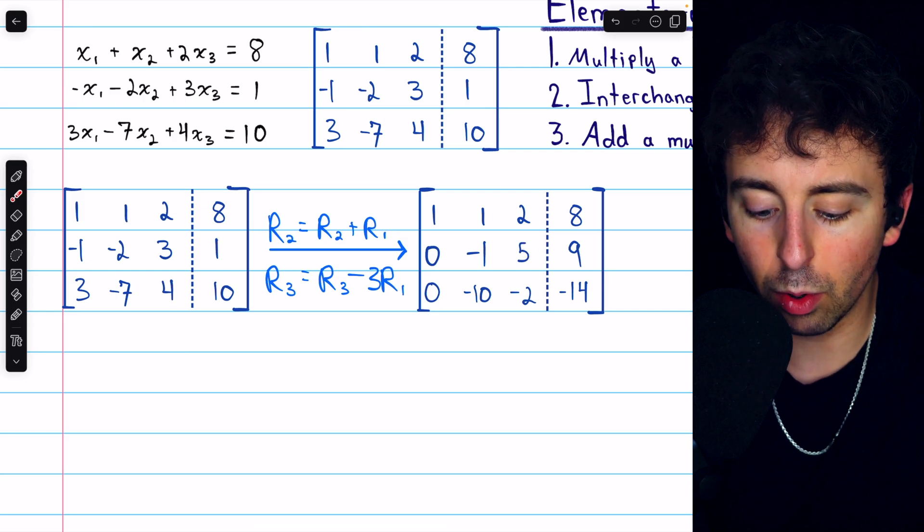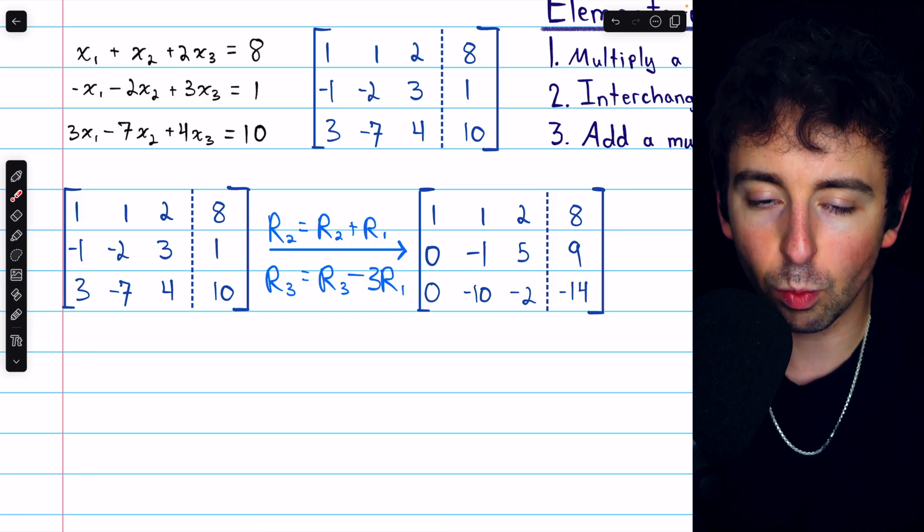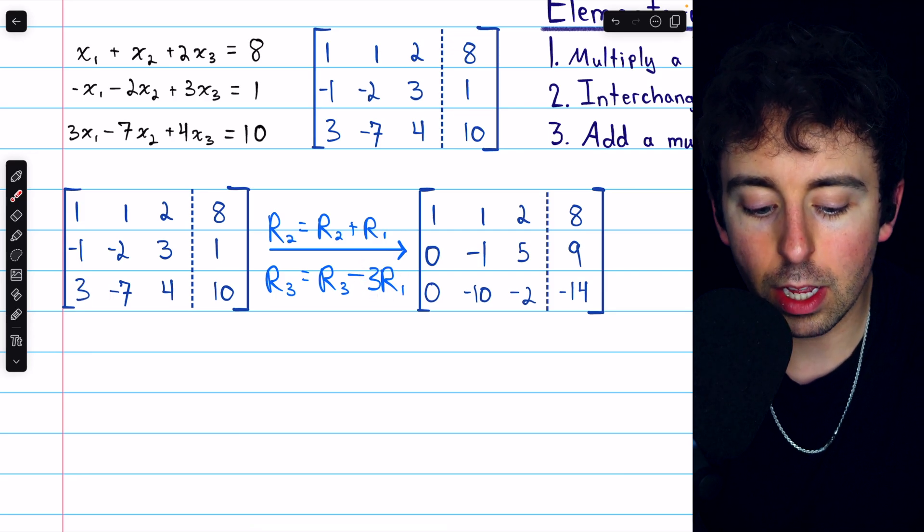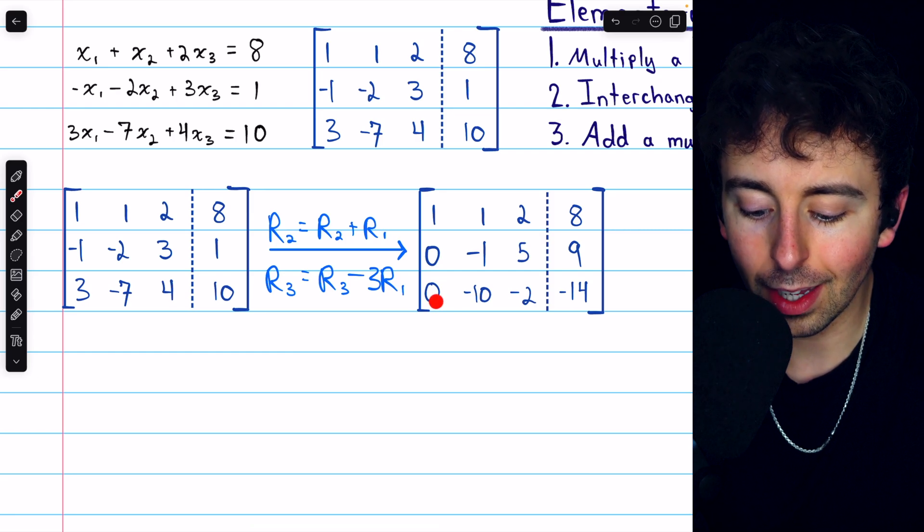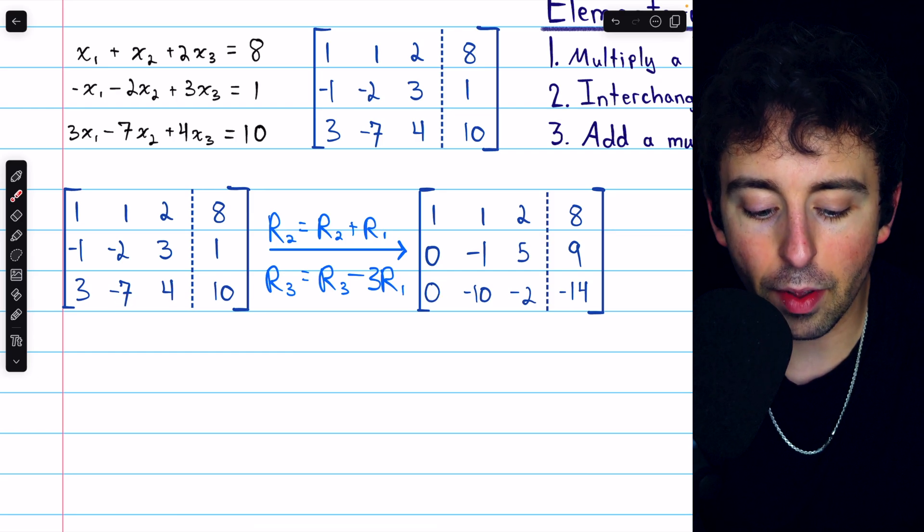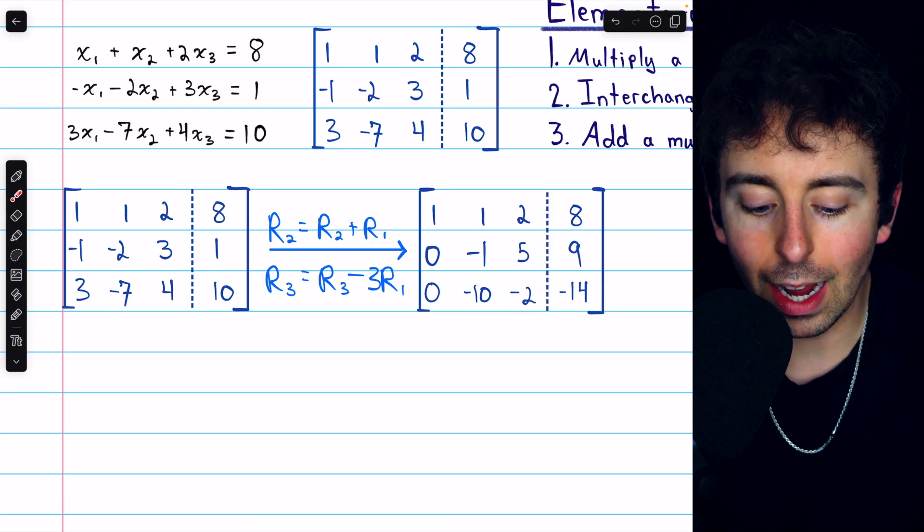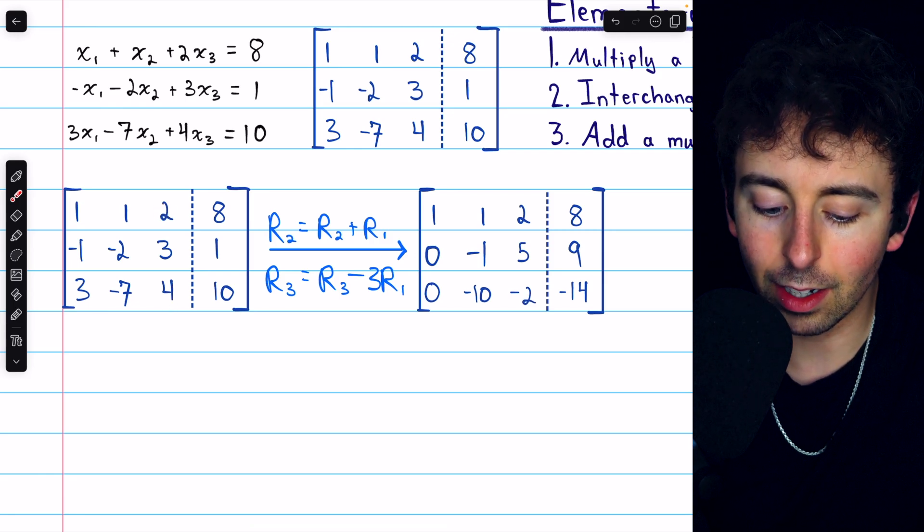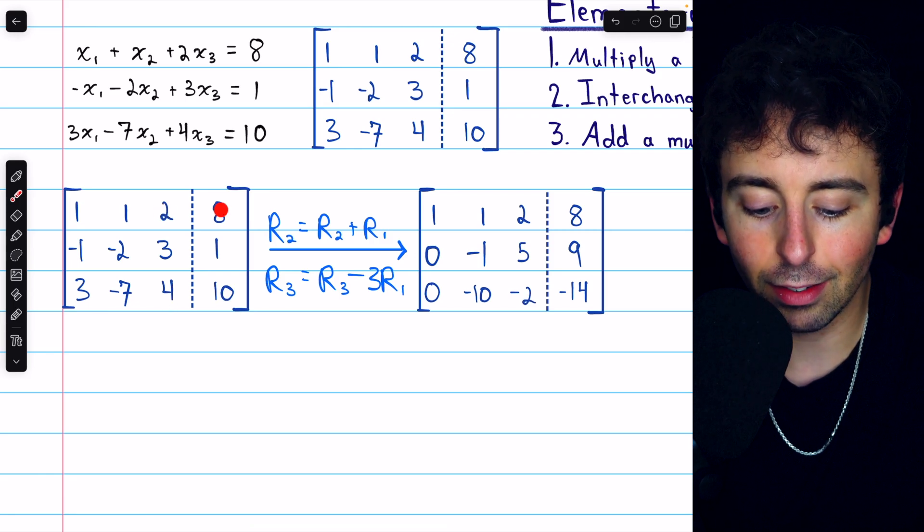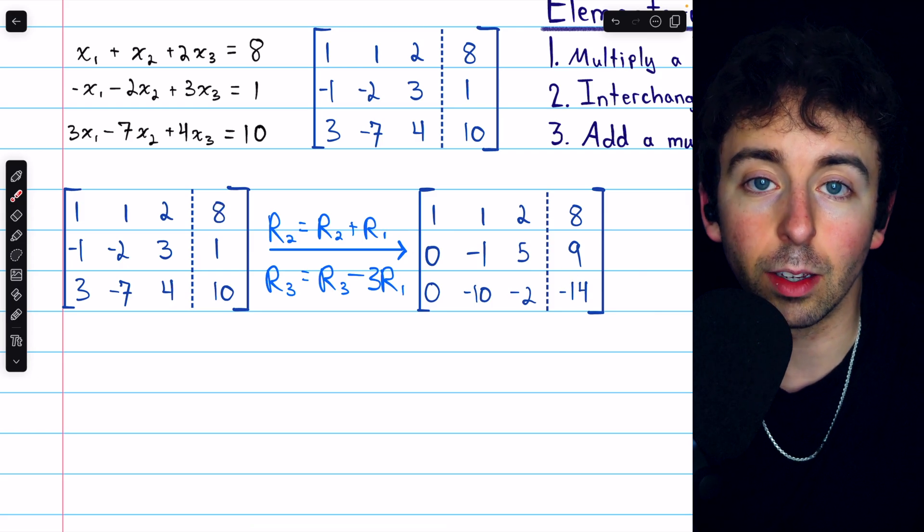As for row 3, we subtracted 3 times row 1 from it. 3 minus 3 times 1 is 0. Negative 7 minus 3 times 1 is negative 10. 4 minus 3 times 2 is negative 2. And 10 minus 3 times 8 is negative 14.